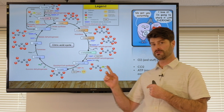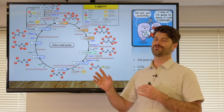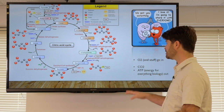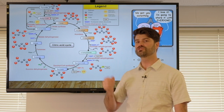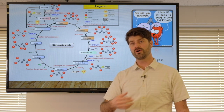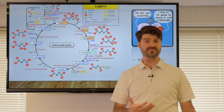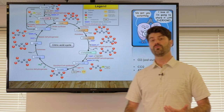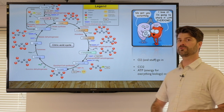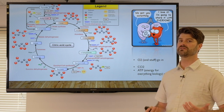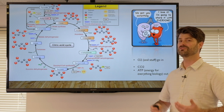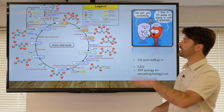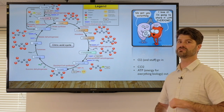Remember the Krebs cycle from high school biology? This is kind of the reason why we care so much about the respiratory system and why it's both the A and the B of the ABCs. All those red dots are oxygen — without oxygen there is no ATP production at the cellular level, meaning there is no cellular energy available and cells will die. Basically everything in biology depends on oxygen.